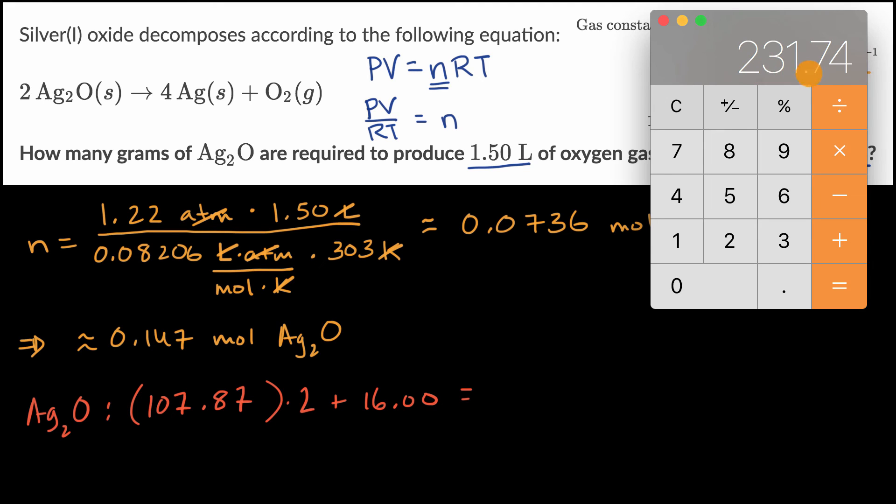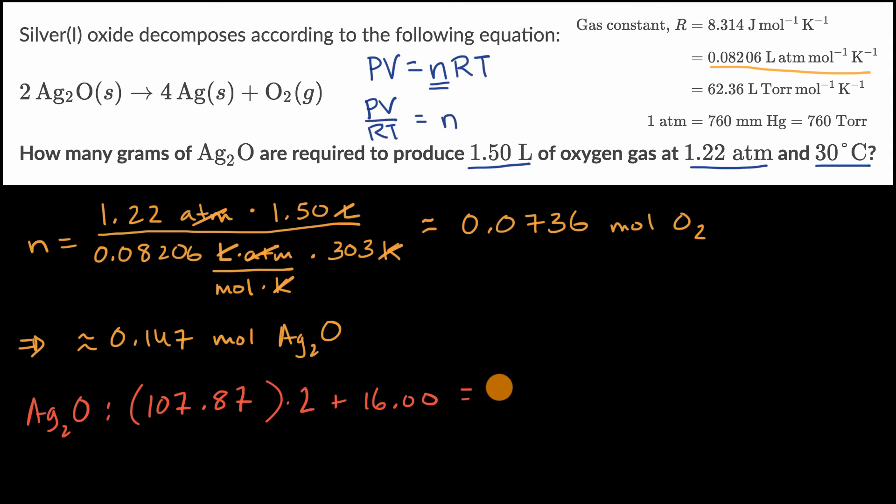Then plus 16.00, going to the hundredths place, gives 231.74 grams per mole of silver oxide.